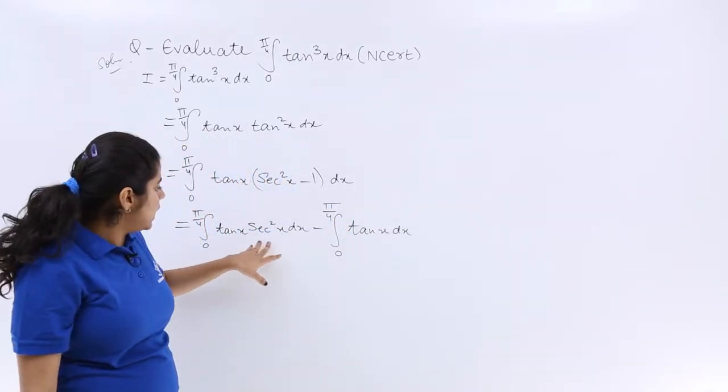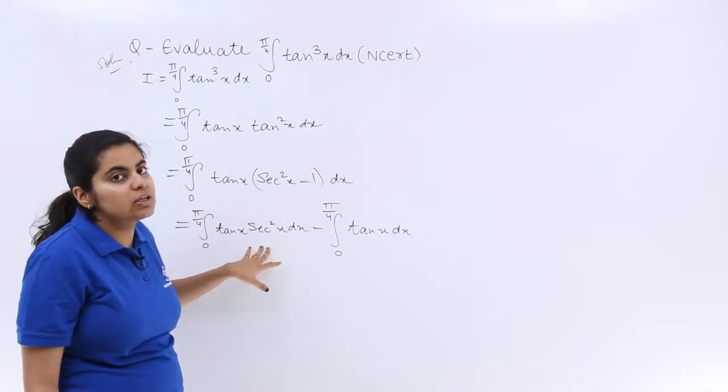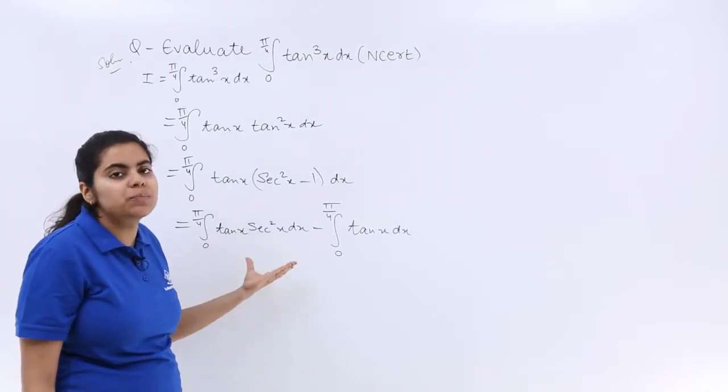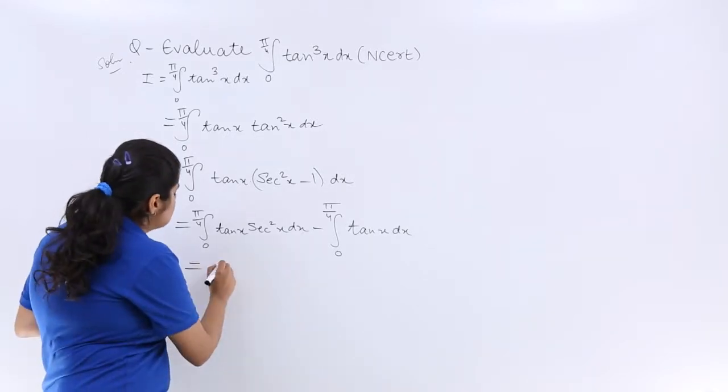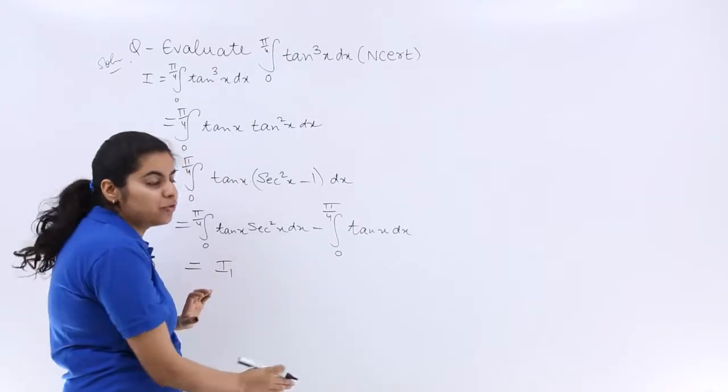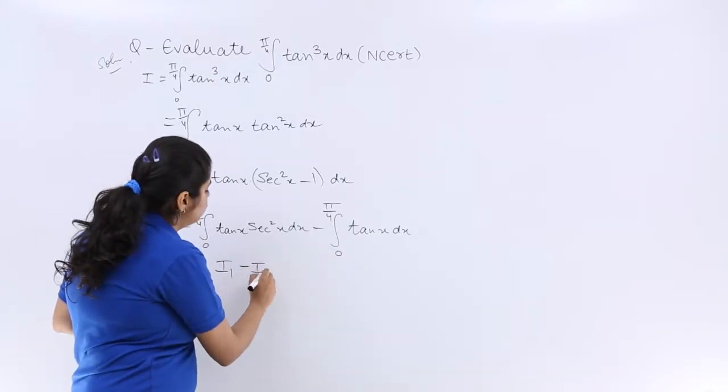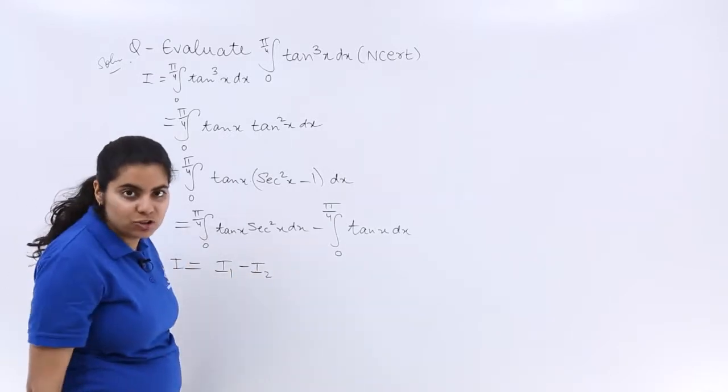Now I know that if I put tanx = t, then sec²x dx = dt. That means substitution can work here. So I will be going by substitution. If this is my I₁ integration and this is my I₂, then I can write I = I₁ - I₂. Now let me evaluate I₁.